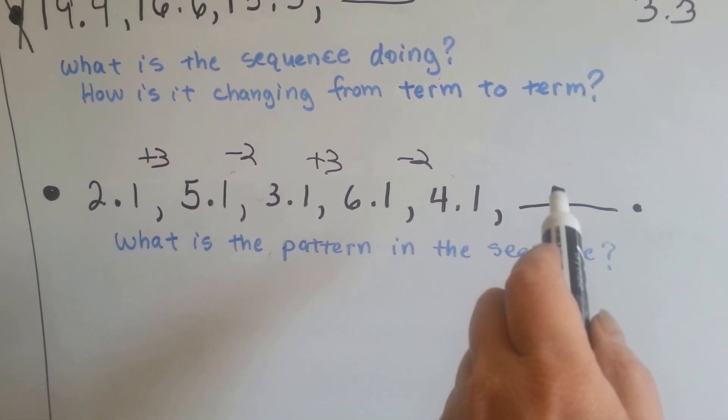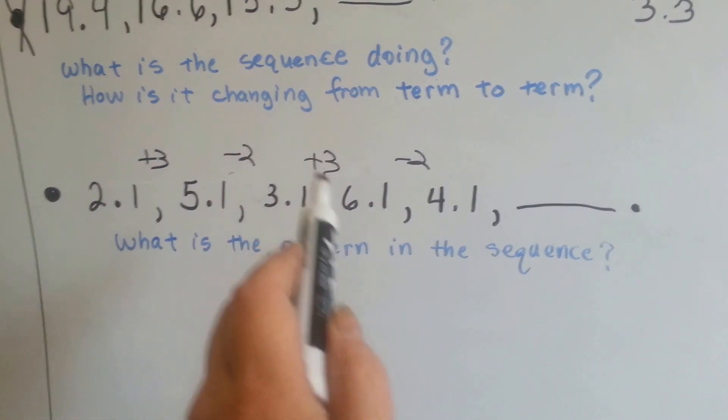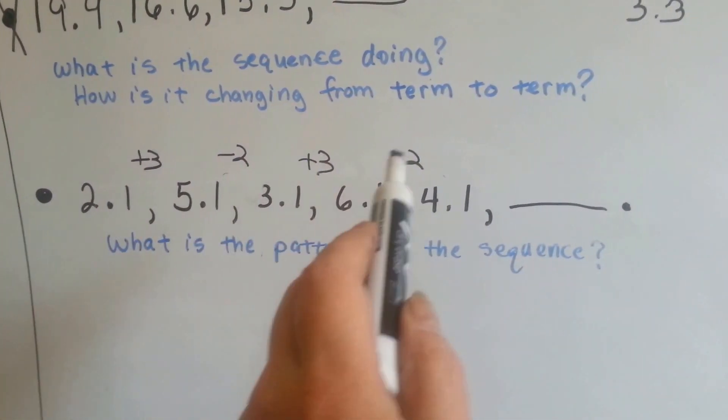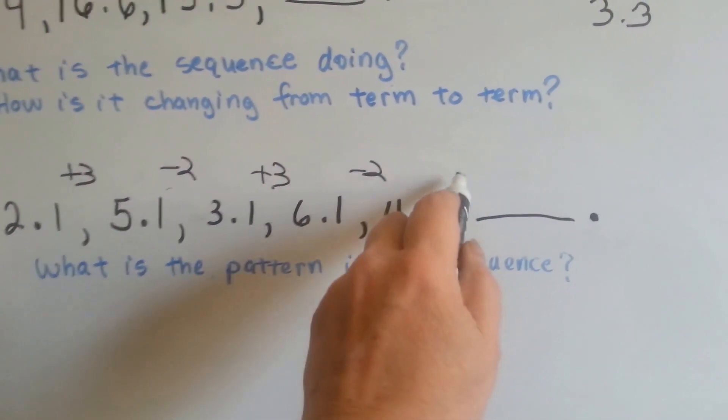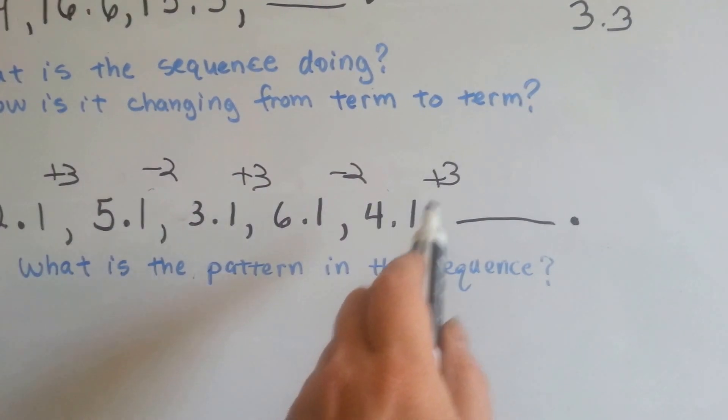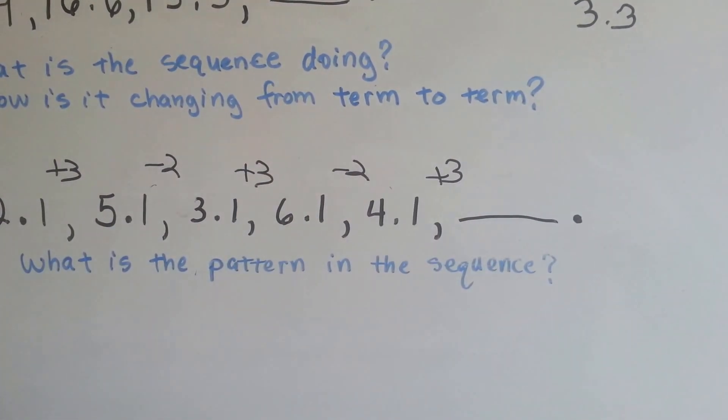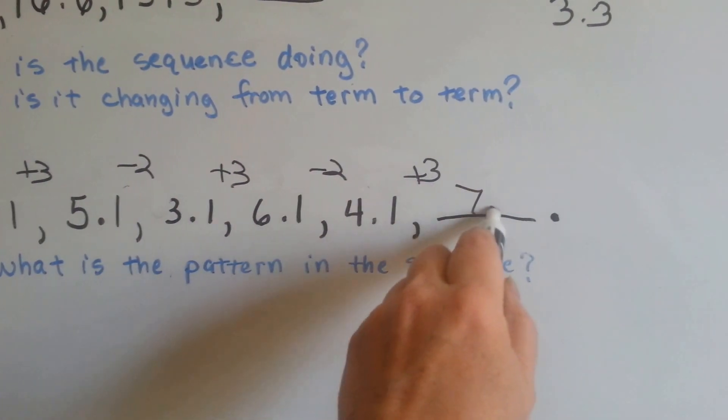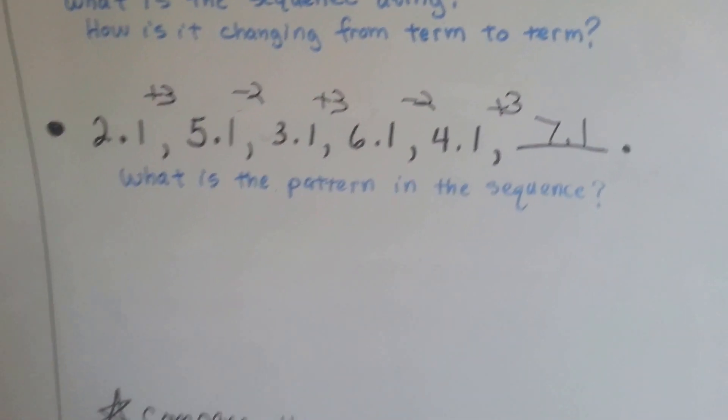So now do we have enough information to do this next one? What do you think it'll do? We've got plus 3, minus 2, plus 3, minus 2. So we do have a sequence and a pattern. The next one should be plus 3. What is 4 and 1 tenths plus 3? If you said 7 and 1 tenths, you're right.